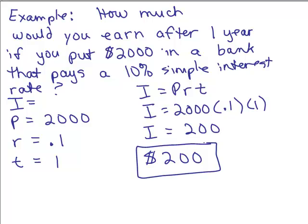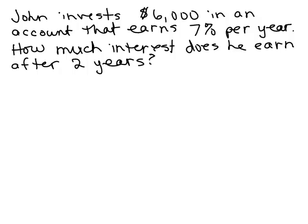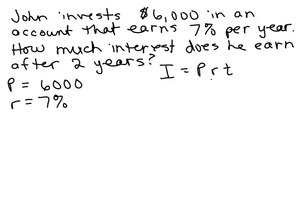That was a fairly easy problem. Now try this one: John invests $6,000 in an account that earns 7% per year. How much interest does he earn after two years? Note: I'm not saying simple interest explicitly here — we assume that unless it says otherwise. So we know I equals PRT. The principal is $6,000, the rate is 7% which we write as 0.07 or 7 hundredths, and the time is two years.